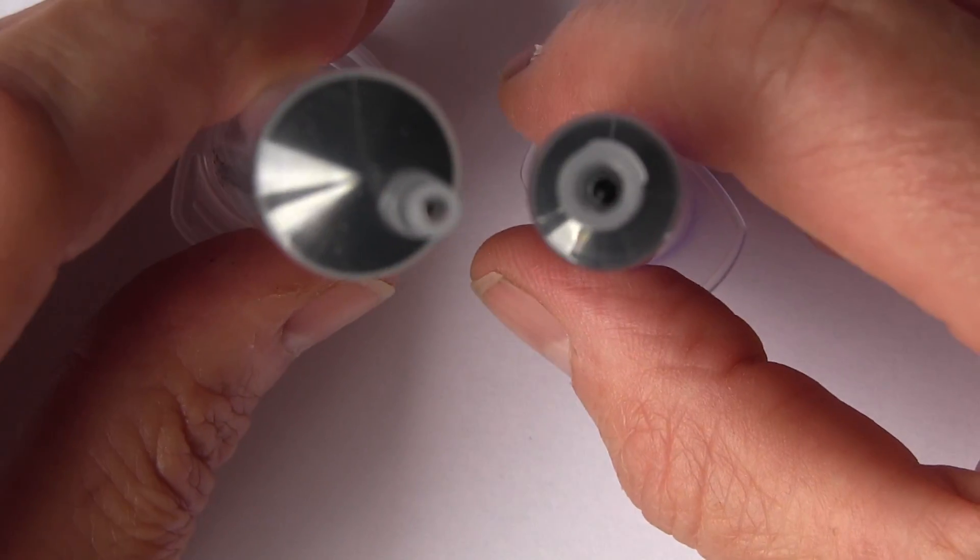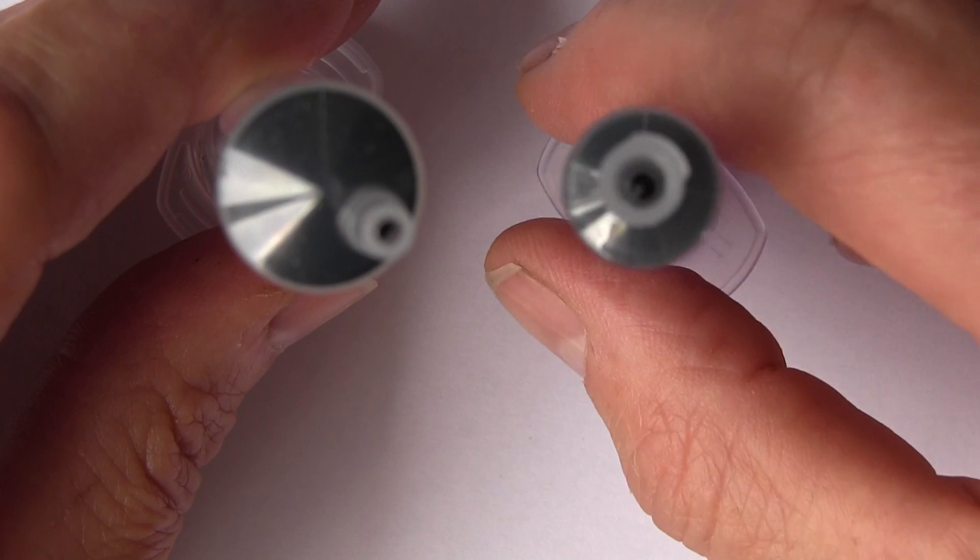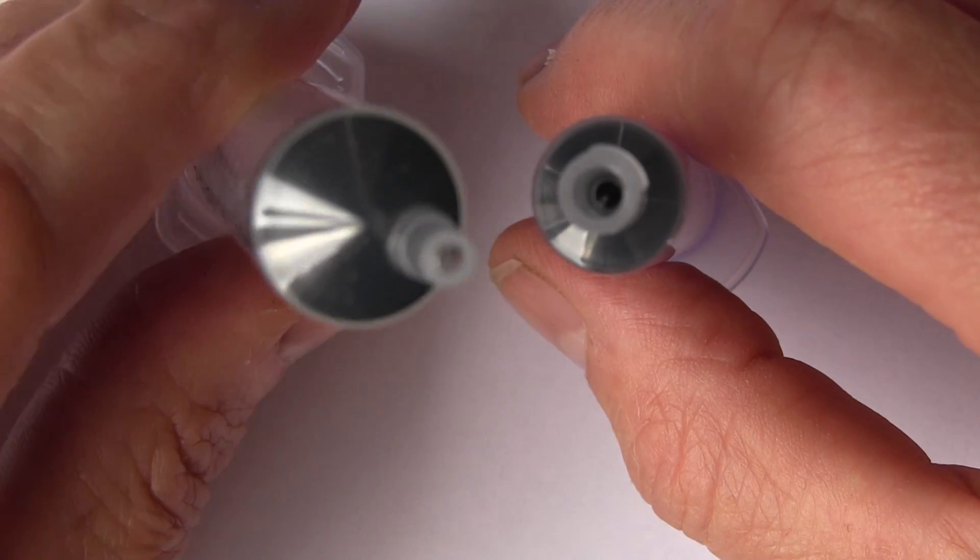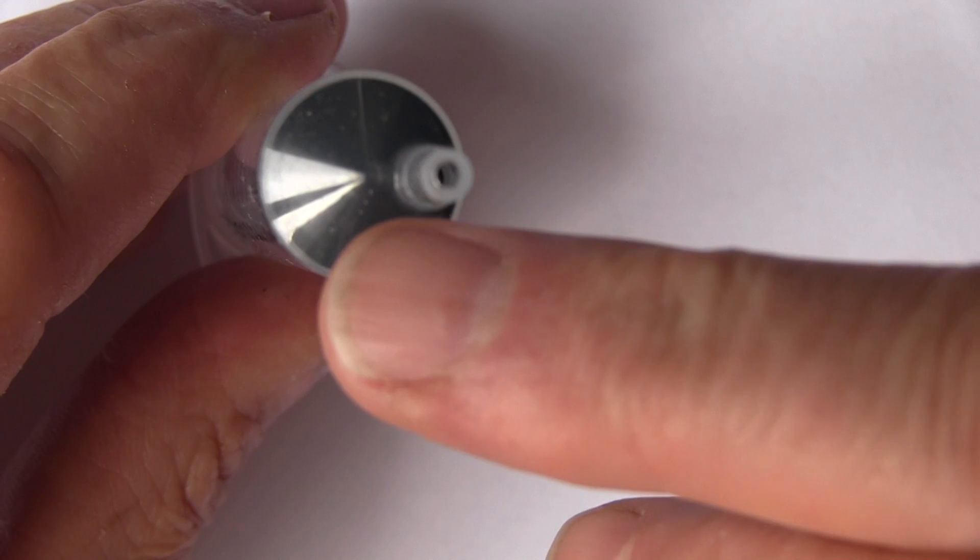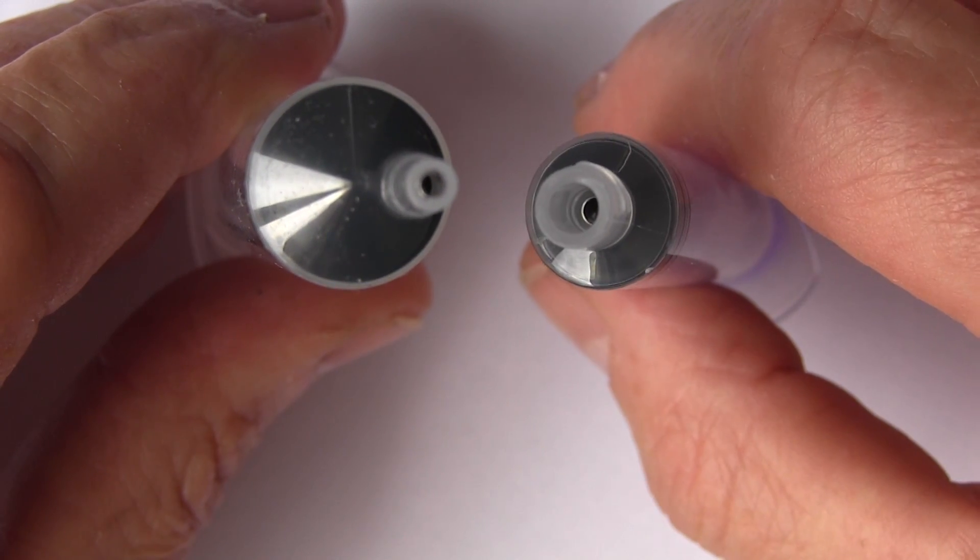I think you can see here that this one, the enteral syringe, has a much wider end than this syringe here. Now why is this?